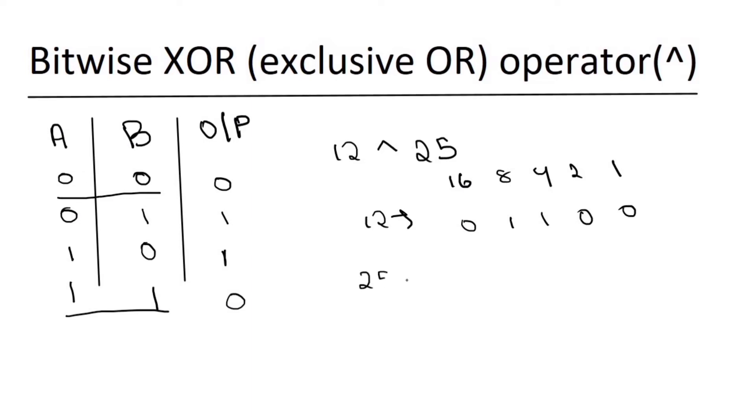And for 25 it is 1 1 0 0 1. So the XOR value will be: 0 1, both are different, output is 1. 0 0, both same, output 0.